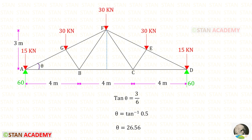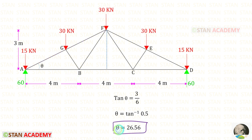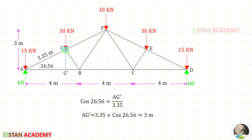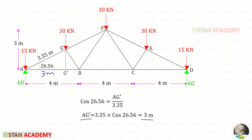We also need to find this angle — let us call it theta. Taking this triangle, we find tan theta as opposite over adjacent, which is 3 over 6, giving theta equal to 26.56 degrees. From joint G, we draw a vertical line to point G dash and find AG dash using cos theta: adjacent side AG dash over hypotenuse 3.35, giving AG dash equal to 3 meters. Therefore G dash B will be 1 meter.